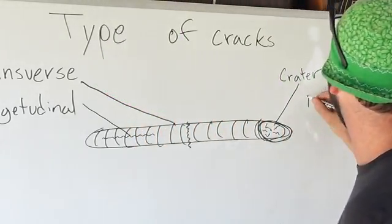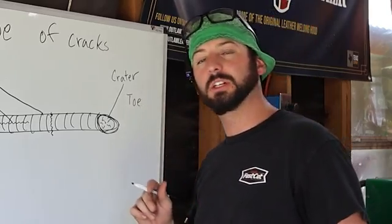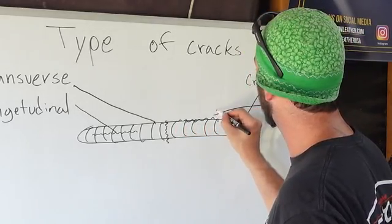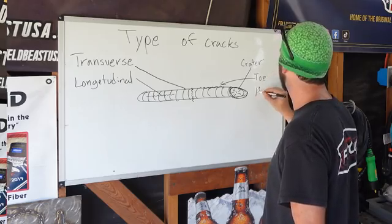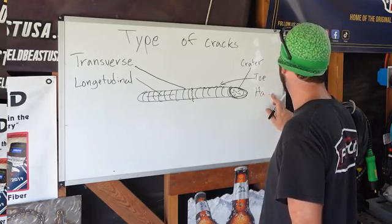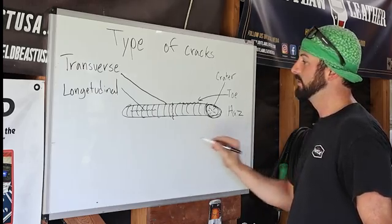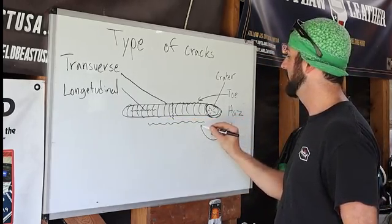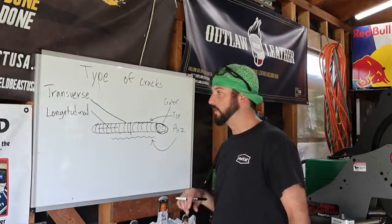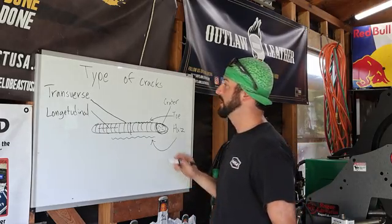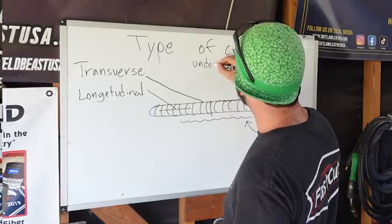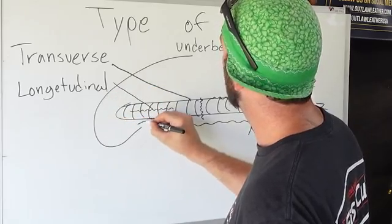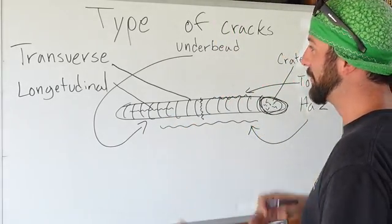Then you have a toe crack — not a crack like your old crusty toes — just a crack on the toe of the weld. Then there's a heat affected zone crack, which is outside the weld bead. And you'll have your under bead crack, which is actually underneath the root in the root pass itself.